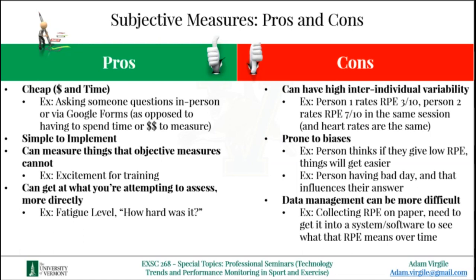Another pro of subjective measures is that they're usually pretty simple to implement, particularly if technology isn't being used. For example, RPE can be collected using pen and paper, or you can simply ask questions in person. Some objective measures are easy to collect too — for example, using a stopwatch to time someone running — but more often than not, subjective measures are easier to implement.